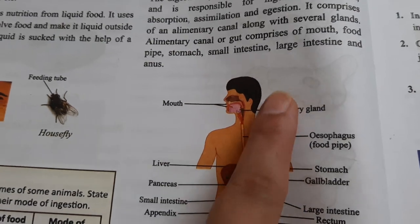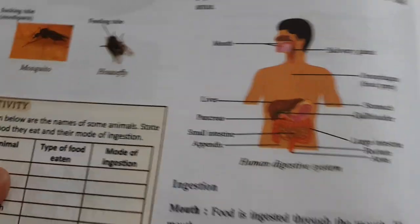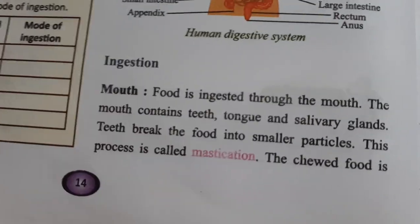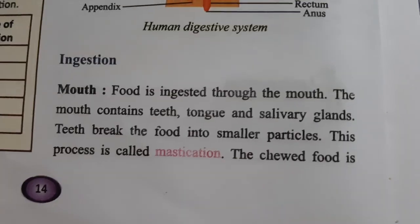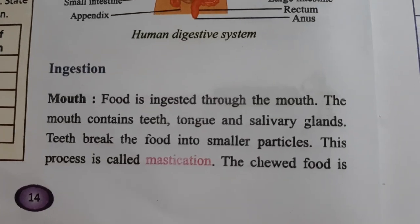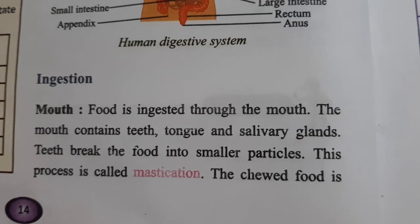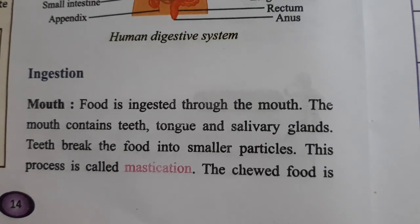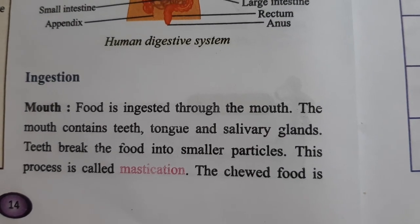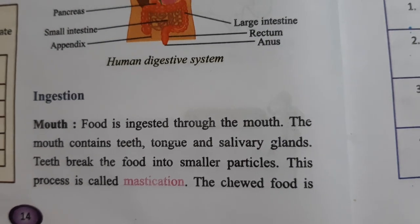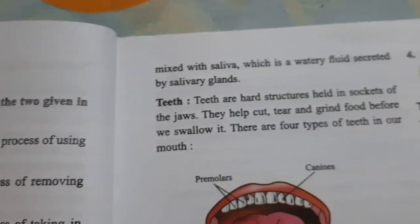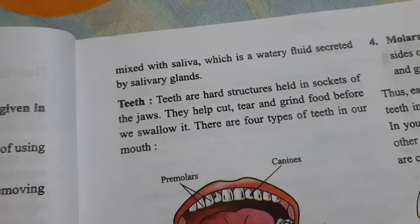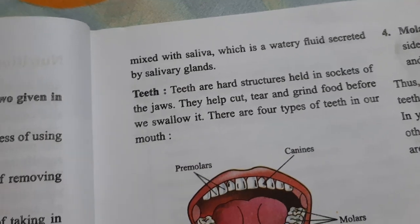The mouth contains teeth, tongue, and salivary glands. Teeth break food into smaller particles in a process called mastication. The chewed food is mixed with saliva, which is a watery fluid secreted by the salivary glands.